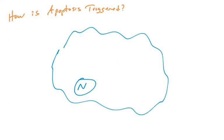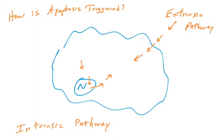How is apoptosis triggered? There are many mechanisms that can trigger apoptosis, many proteins involved. We're going to talk about two separate pathways: the intrinsic pathway and the extrinsic pathway. The intrinsic pathway refers to a cell sensing stress within itself — proteins and molecules in the cell detect that stress, genes are turned on, proteins are activated, and the cell decides itself to undergo apoptosis. The extrinsic pathway involves signals coming from outside the cell telling it to undergo apoptosis.